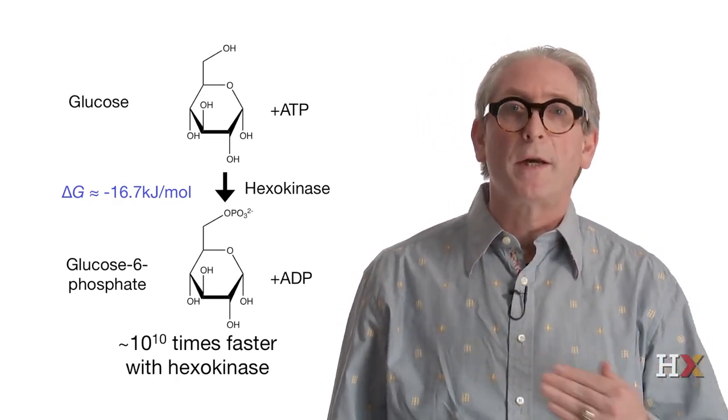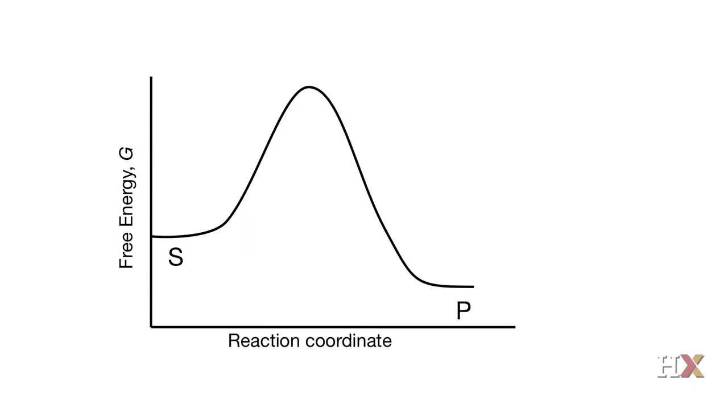Now, if we look again at the reaction coordinate graph, we have a spontaneous reaction because the free energy of the product is lower than the free energy for the substrate. Why do we need an enzyme if the reaction is spontaneous? Don't be fooled by the term spontaneous. It just means that you have a favorable reaction that proceeds from a high free energy state to a low free energy state.